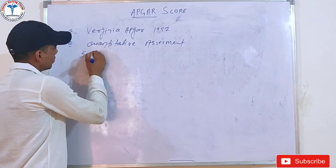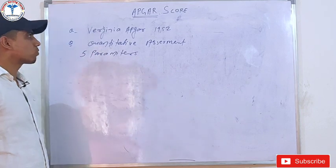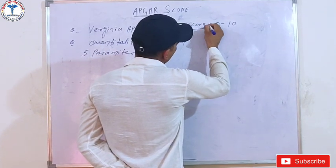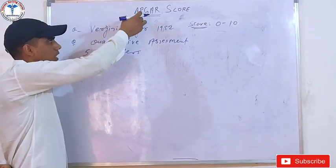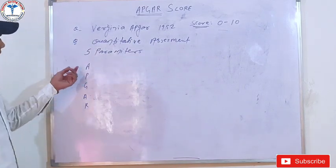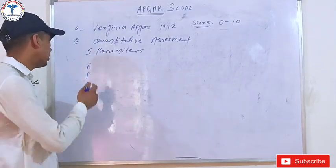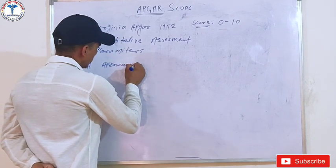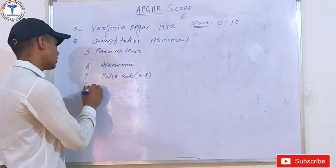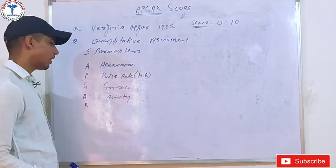The scoring range is from 0 to 10. The APGAR acronym stands for: A is Appearance — the color of the child, how is the skin color. P is Pulse rate, which is the heart rate. G is Grimace, which is activity or reflex. R is Respiratory effort.